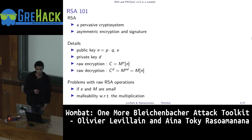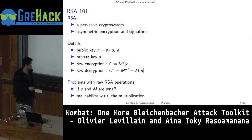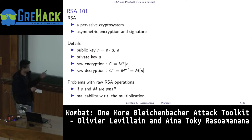But RSA has some problems. For example, if E and M are small. But another problem for RSA is also the malleability with respect to multiplication. We will see later that we can exploit this weakness of RSA to realize the Bleichenbacher attack.